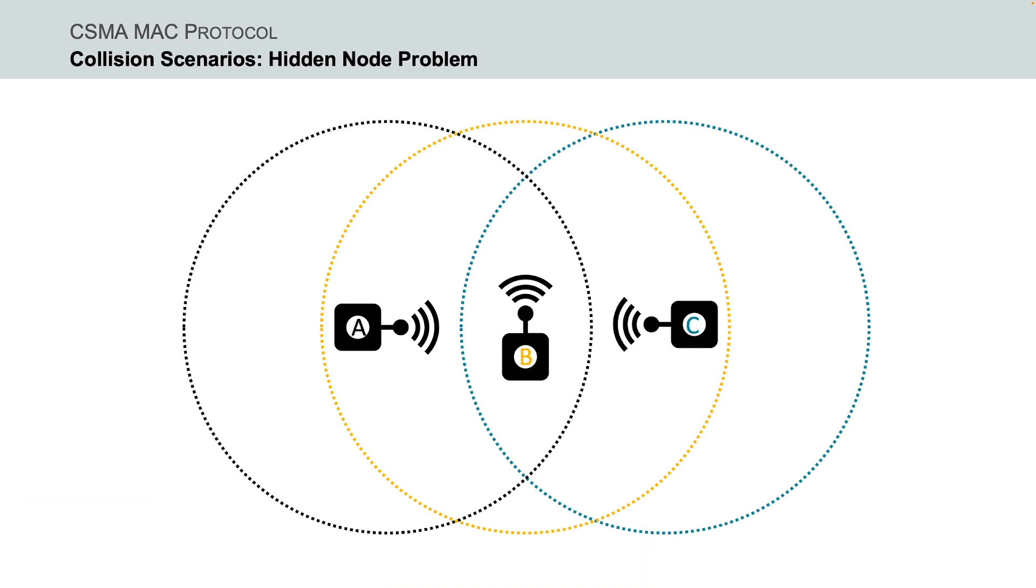The problem is when nodes A and C not necessarily at the same time perform the carrier sense mechanism to detect that the shared channel is idle and start to transmit frames to the common destination node B. Because the nodes A and C cannot receive each other's signals, they cannot detect the collision before or while transmitting. As a result, the node B receives corrupted frames.